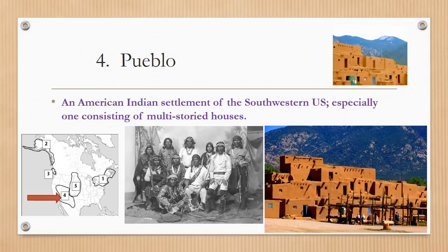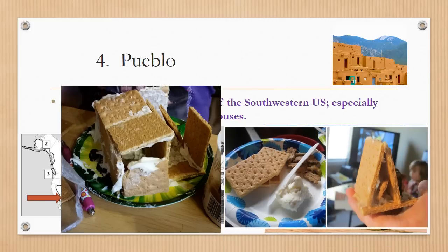Number four is Pueblo, an American Indian settlement of the southwestern U.S., especially one consisting of multi-storied houses. Pueblo has many different meanings: it can mean the adobe multi-storied apartment houses, it can mean an actual tribe or group of people, and it can also mean the groups of Pueblo tribes that lived in the southwestern part of the United States. Fun tidbit: you can make Pueblo houses with graham crackers and icing.